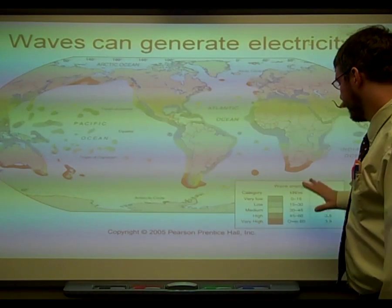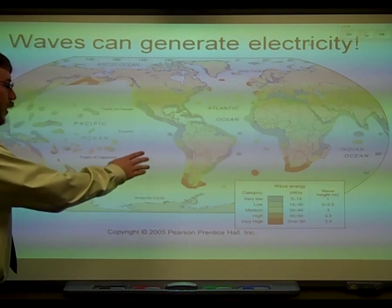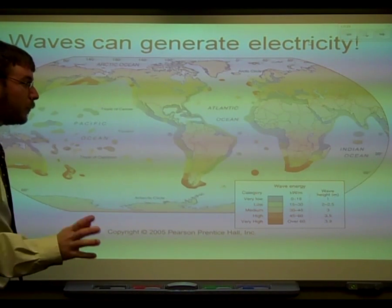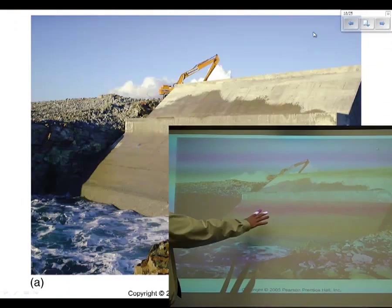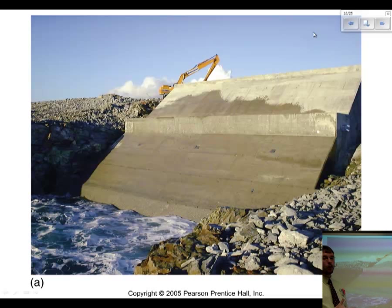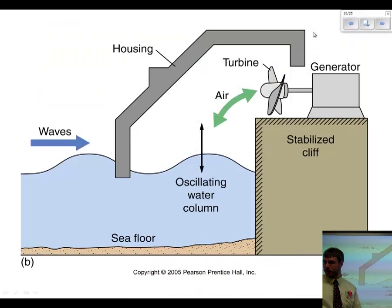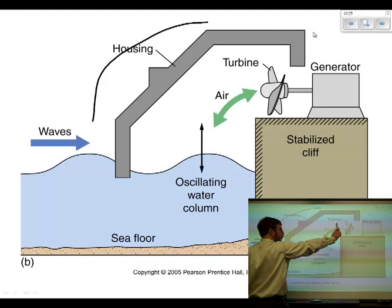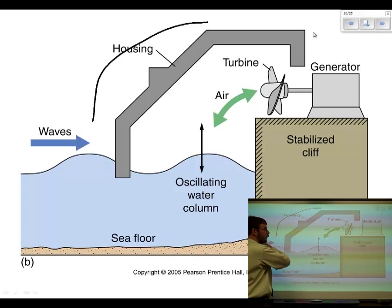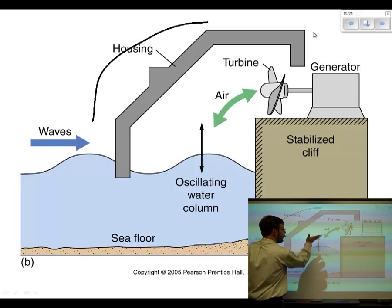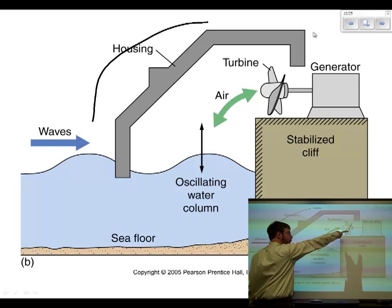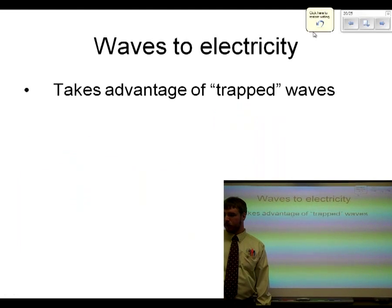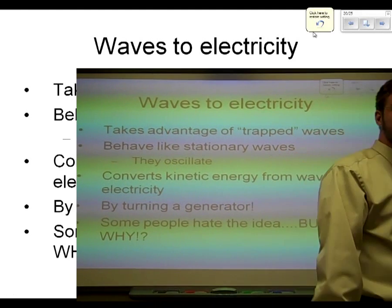Waves can also generate electricity. Here is a map showing different parts of the world and how the energy is being generated — not wind power, wave power. Here's a picture showing a big wall that is actually designed to catch the waves and generate electricity, very similar to a dam but designed to be coastal. Inside, you've got your turbine. The water comes in and the water goes out, and every time it pushes up, it's pushing air up to actually spin the generator and generate electricity.